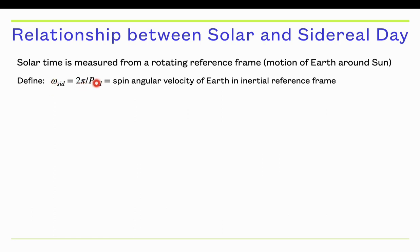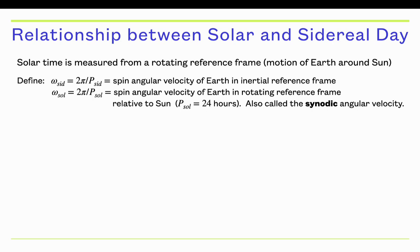That angular velocity is 2π over the period, so P_sidereal is the time or the period it takes for the Earth. That's that 23 hours and 56 minutes measurement that we just talked about. The solar angular velocity is the spin angular velocity of the Earth as measured in a rotating reference frame, sometimes called a synodic angular velocity. By definition, P_solar is 24 hours. The final angular velocity is the orbital angular velocity of the Earth going around the Sun, equal to 2π over the orbital period. The orbital period is exactly a year, 365.24 days.